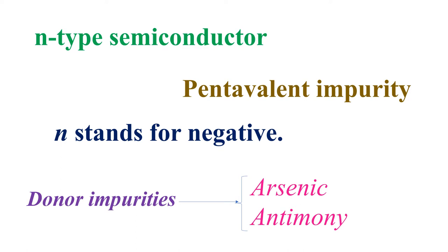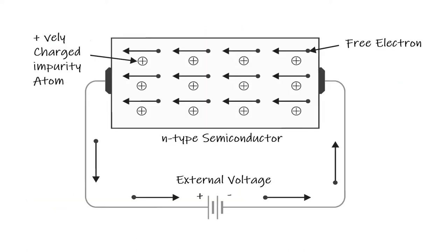When external voltage is applied across the n-type semiconductor, the free electrons, which are donated by impurity in the crystal, will be directed towards the positive terminal, constituting electric current.